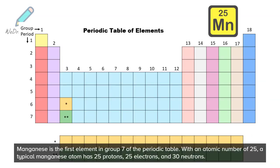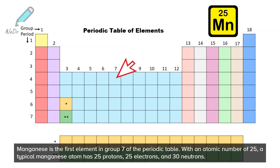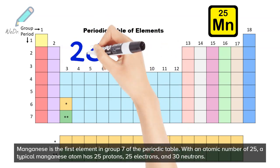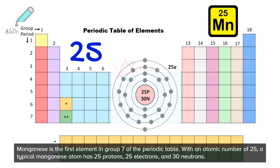Manganese is the first element in group 7 of the periodic table. With an atomic number of 25, a typical manganese atom has 25 protons, 25 electrons, and 30 neutrons.